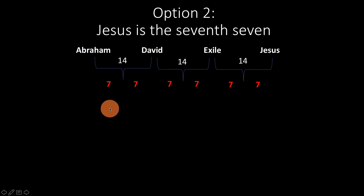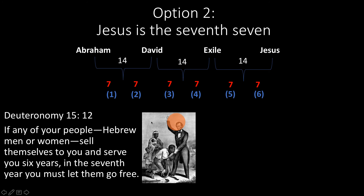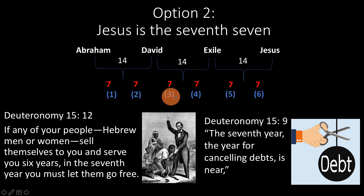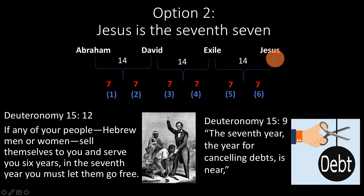Now let's count how many 7s we have altogether: 1, 2, 3, 4, 5, 6 sevens. We have 6 sevens. Why is this important? In Deuteronomy 15 we read: 'If any of your people, Hebrew men or women, sell themselves to you and serve you for 6 years, in the 7th year you must let them go free.' Likewise: 'The 7th year, the year for cancelling debt, is near.' So in Israel, people were meant to be slaves for 6 years and set free in the 7th year, and after 7 years all debt was cleared. By giving us 6 sevens, Matthew is as if saying: the hard work is over, the debt is over, the slavery is over. With Jesus, we're going into a new period — into the 7th 7th, the ultimate Sabbath.